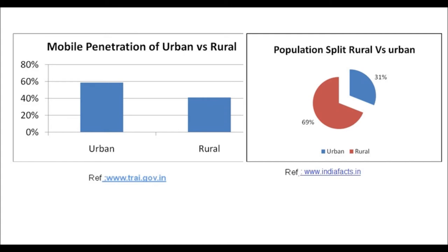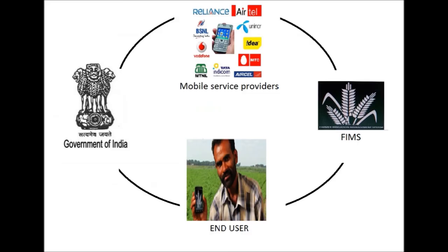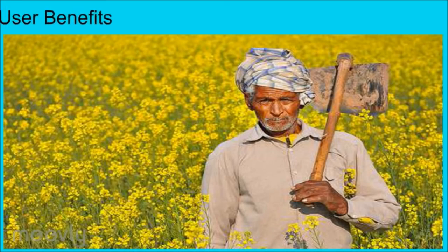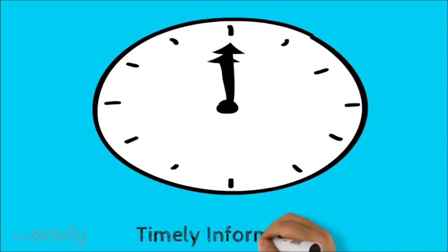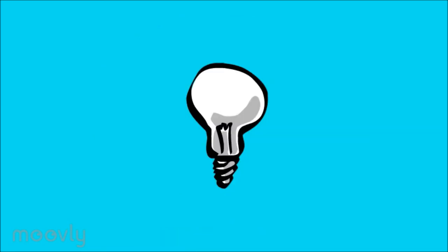As we know, the government is providing many types of subsidies on products such as fertilizers, seeds, etc. Looking at the circumstances, the government can tie up with different mobile service providers to offer this facility to farmers, which will incur almost negligible cost, and of course the end-user benefits. FIMS offers numerous benefits to end-users as it can provide timely information of water supply through canals, emergency alerts, and important information regarding government schemes and availability of seeds to farmers.